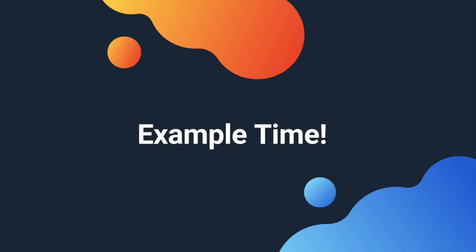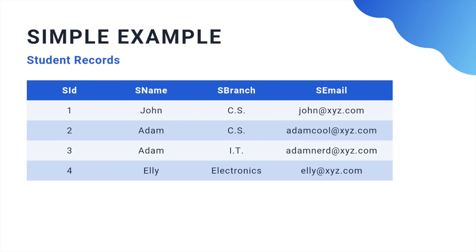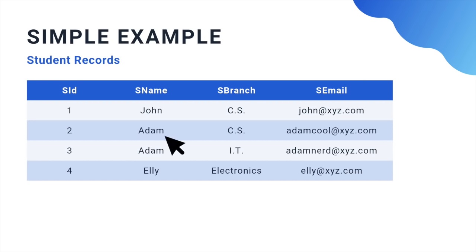Let's take an example. In the table above we have SID, S_name, S_branch, and S_email as attributes saving details about students. If I ask you to tell me the email address of the student with name Adam, can you tell me?